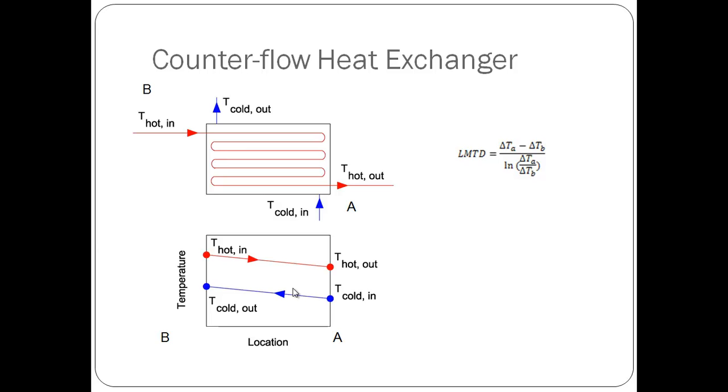Thus, the log mean temperature difference is used. The LMTD describes the logarithmic average temperature difference between the cold and hot fluid through a generic heat exchanger, either counter or parallel. The LMTD cannot be used for heat exchangers with a phase change like a boiler or condenser.